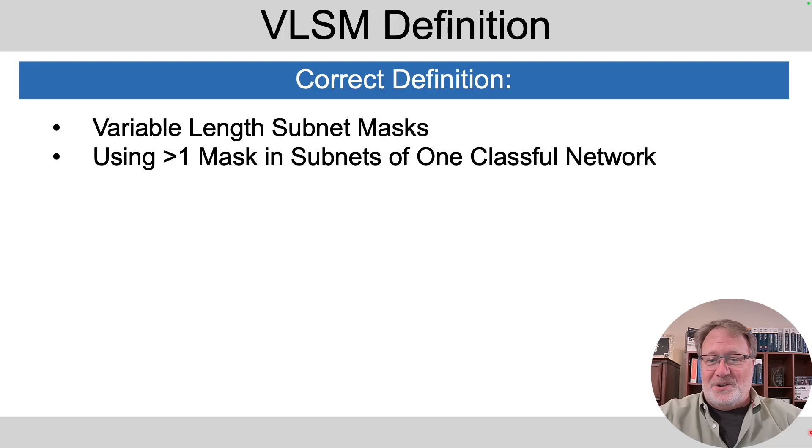So let me define this term for you. VLSM, Variable Length Subnet Masks, it means using more than one mask in the subnets of one classful network. Now, classful network means class A, B, or C network.